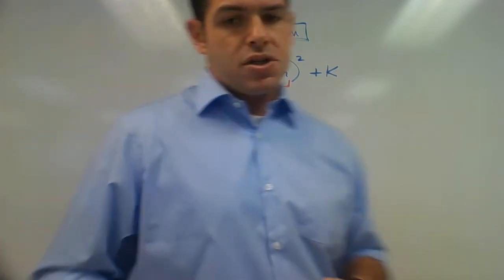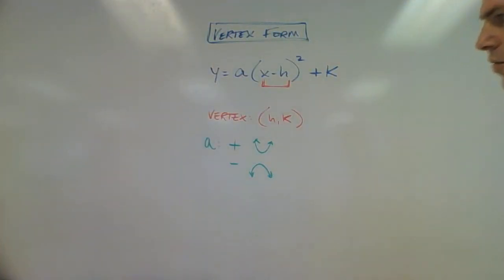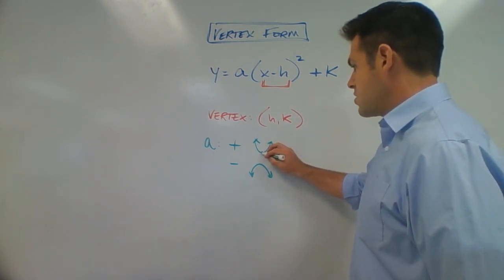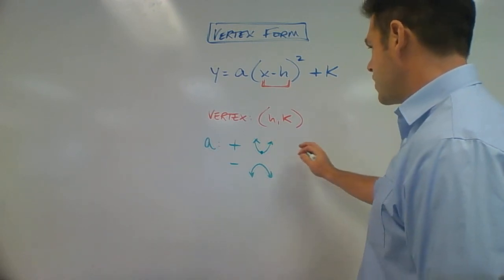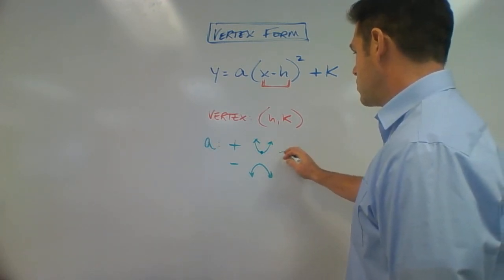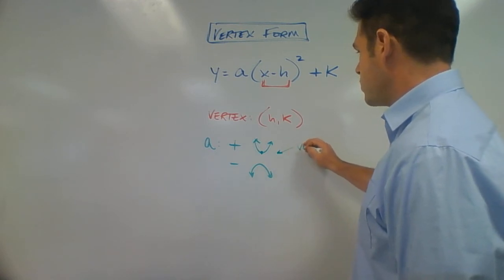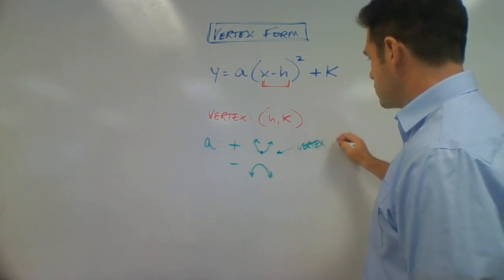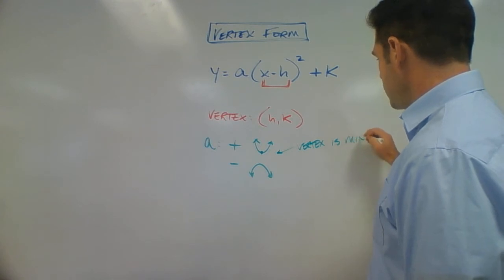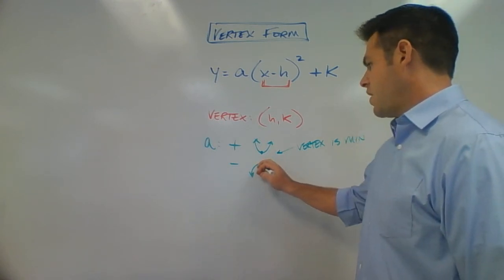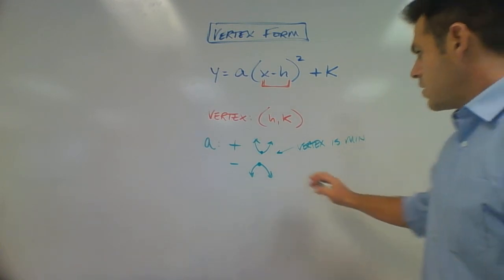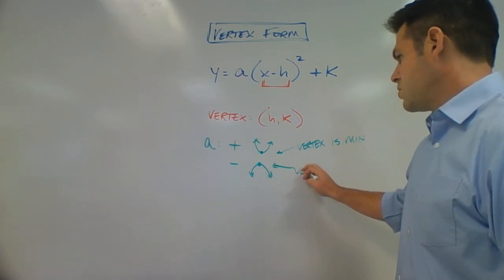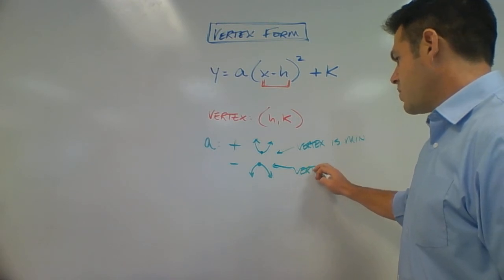Of course, with that, we should know that since we're dealing with vertex form, what does that tell us about the vertex? Here's the vertex if we're positive, and in that location, the vertex would be a minimum. And if the a value is negative, our vertex would be right there, and in that case, our vertex would be a maximum.